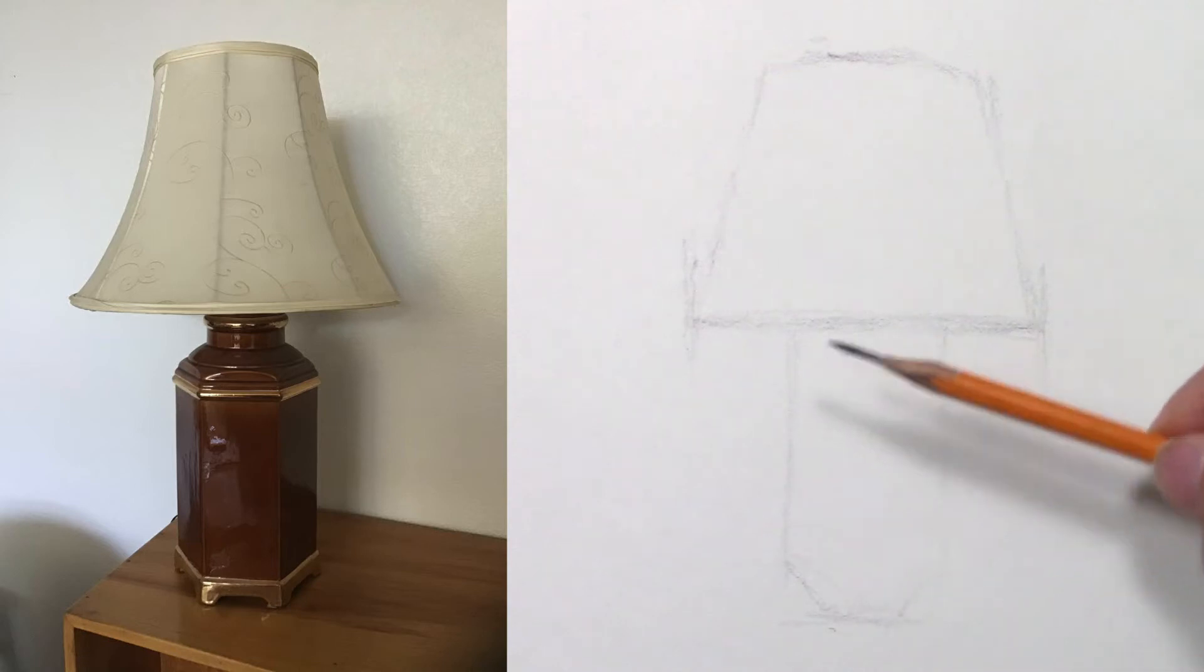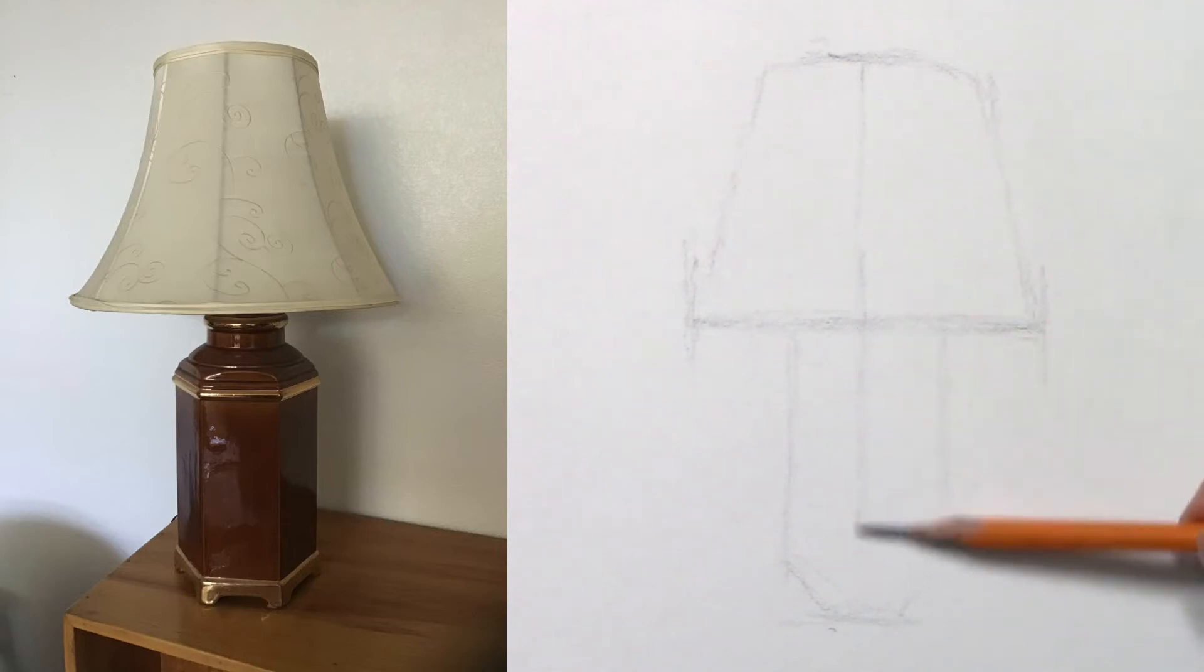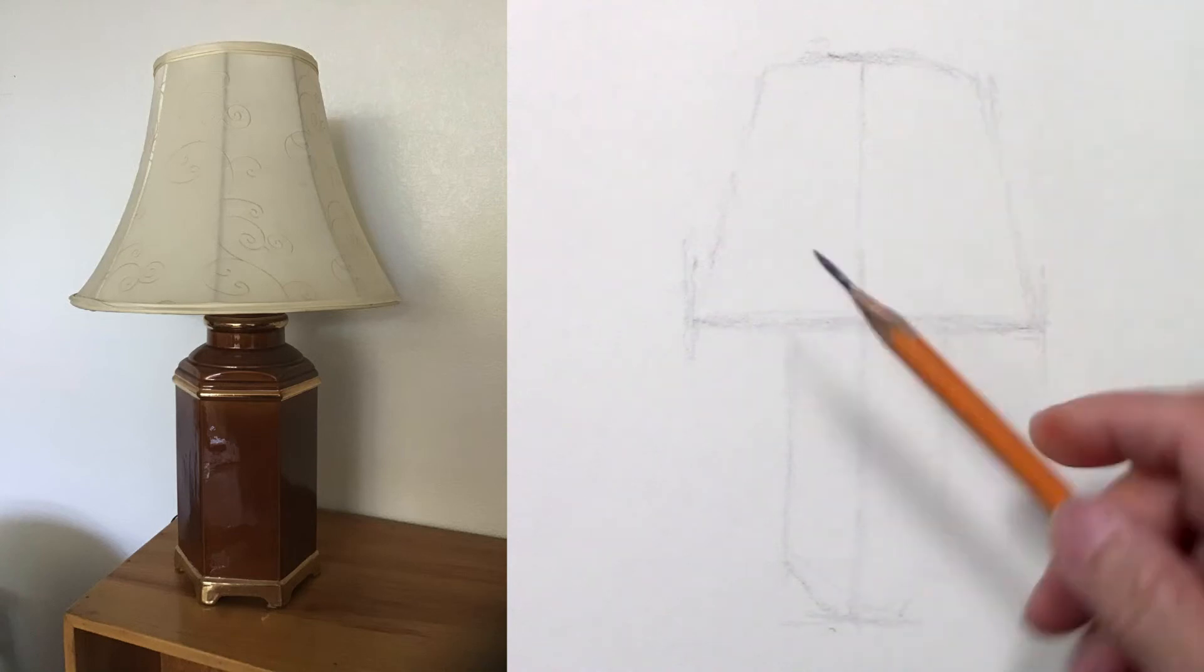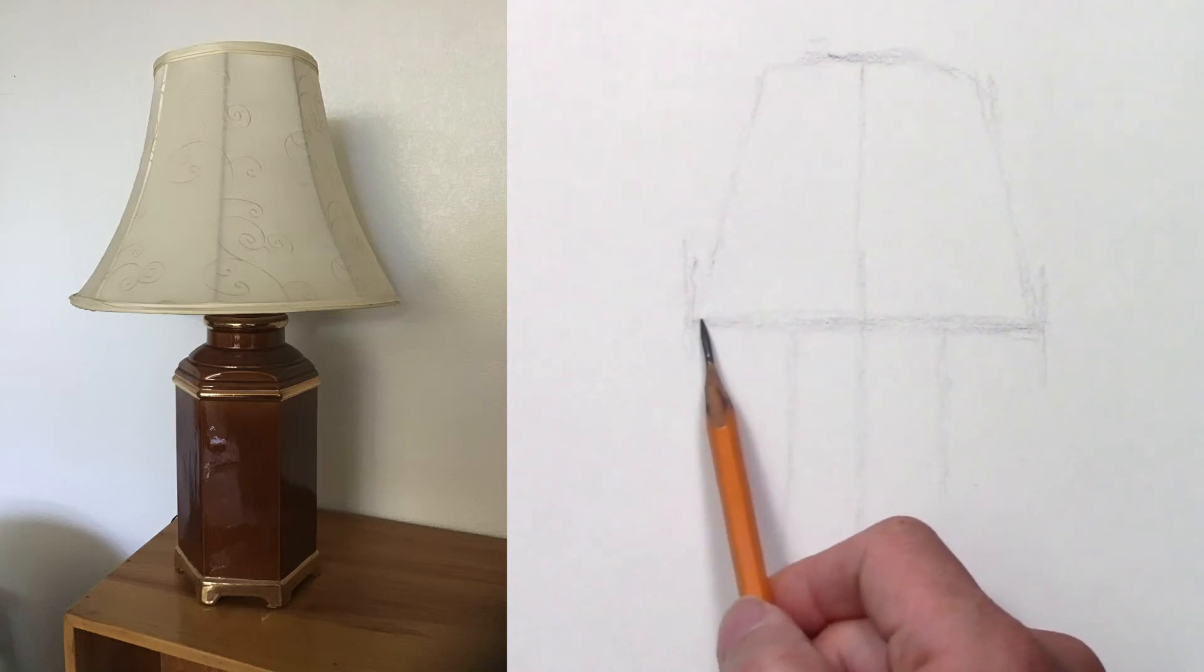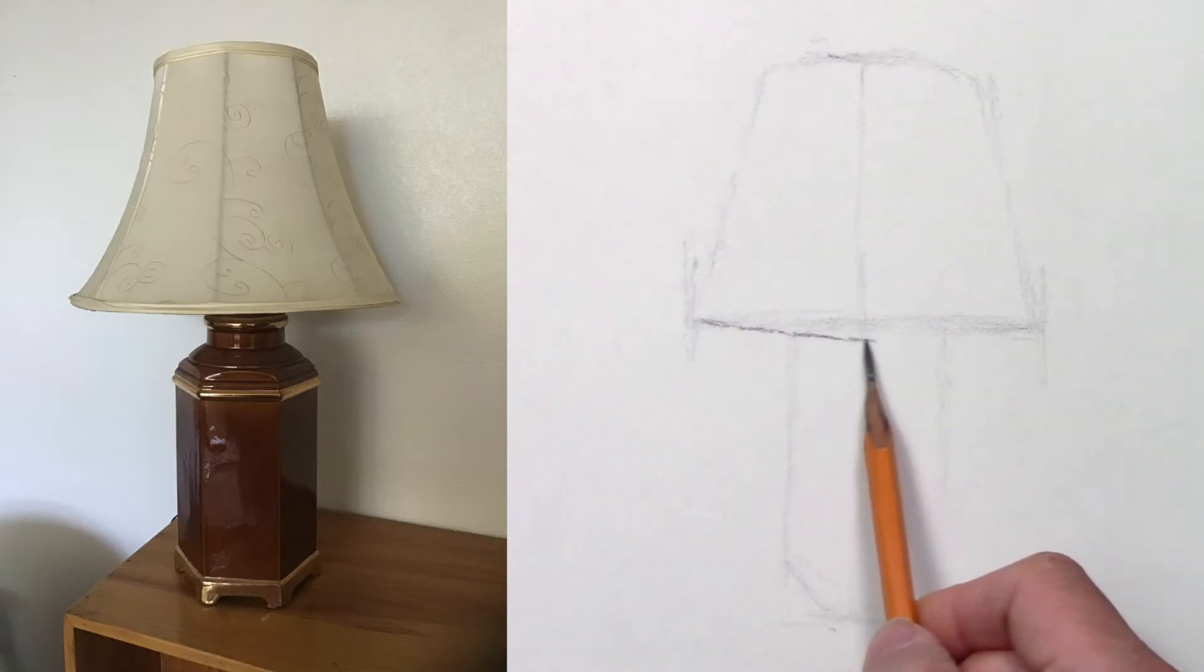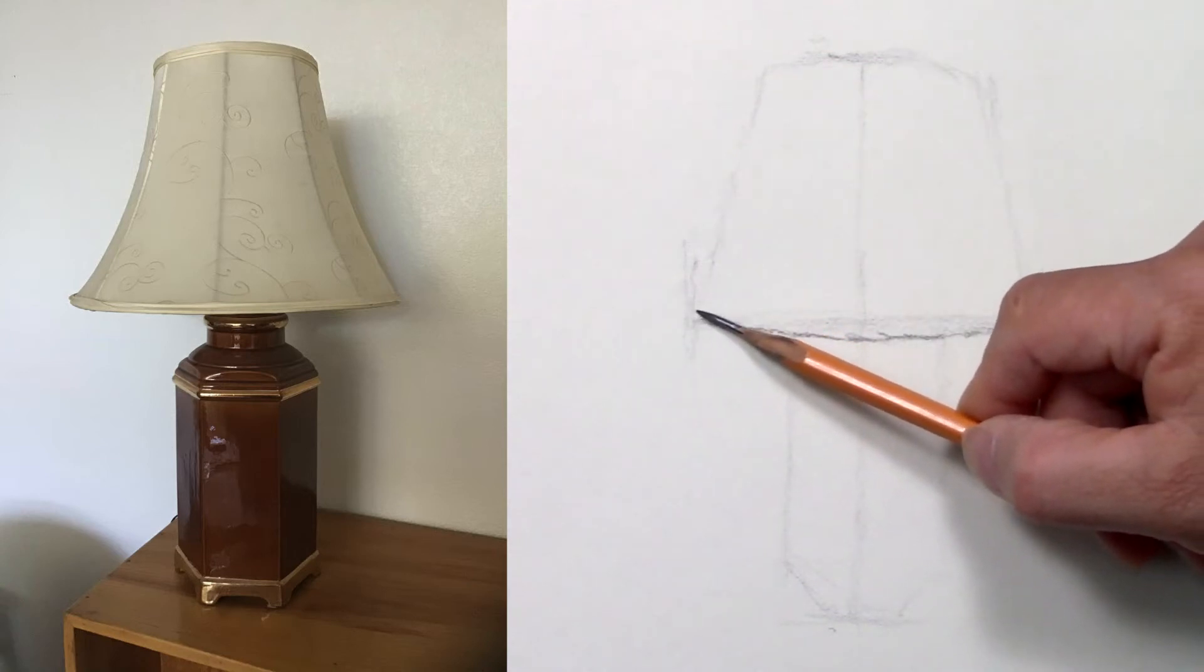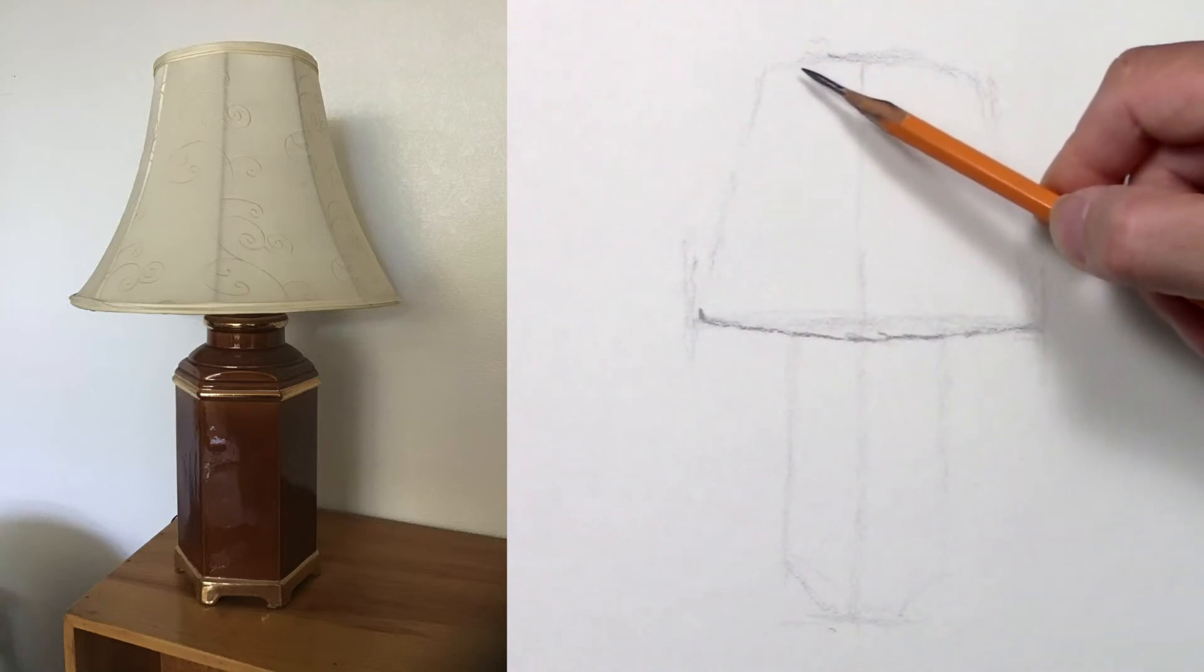So once I'm done with that, I will draw a vertical line to control the symmetry on the left side and the right side. And then I will start refining the shapes. I can see here that it's round or curvy.